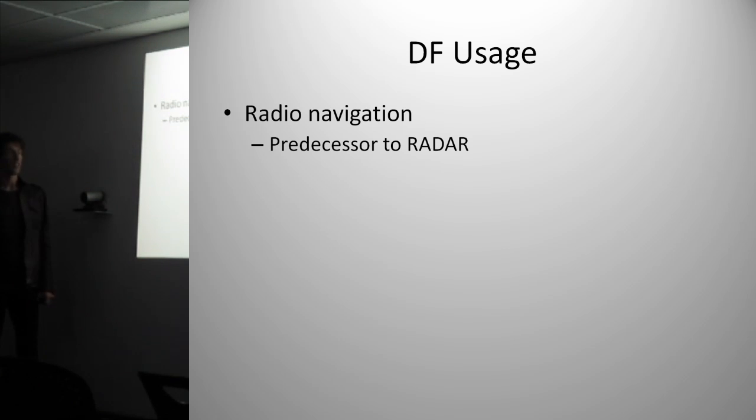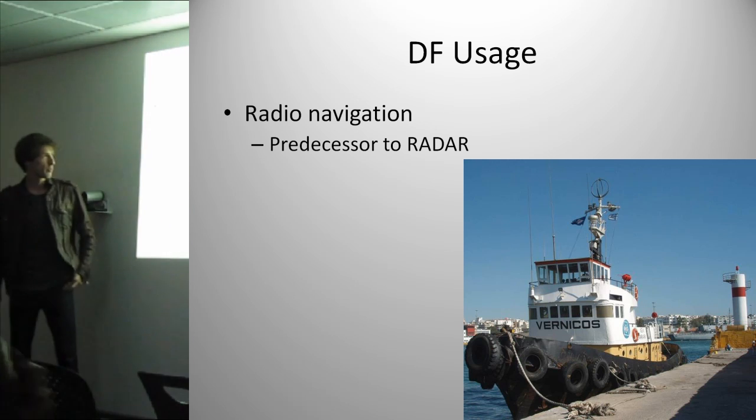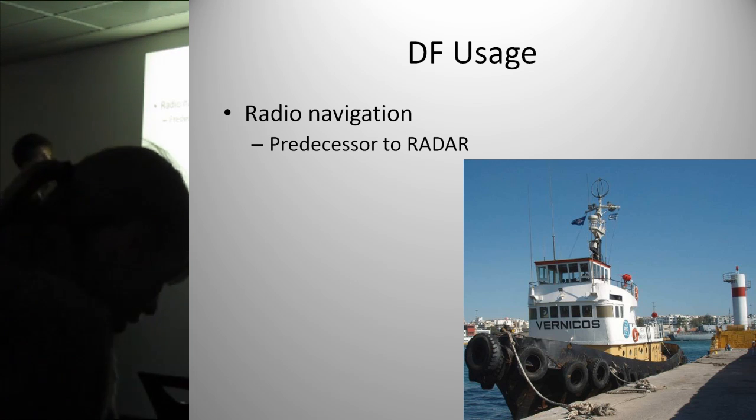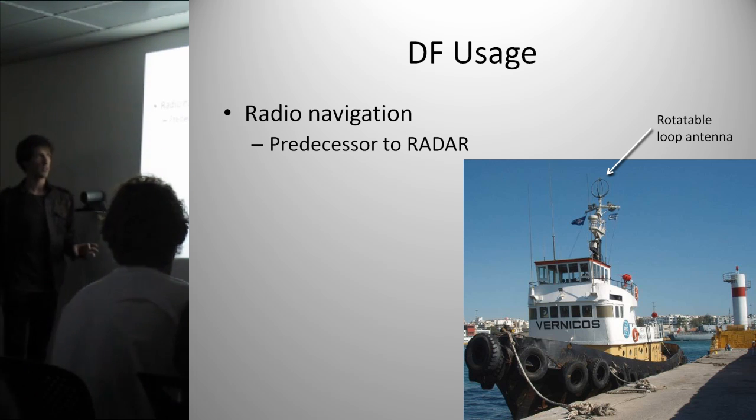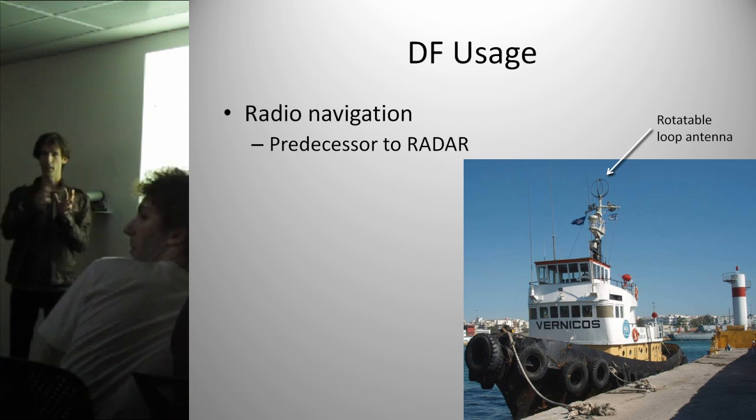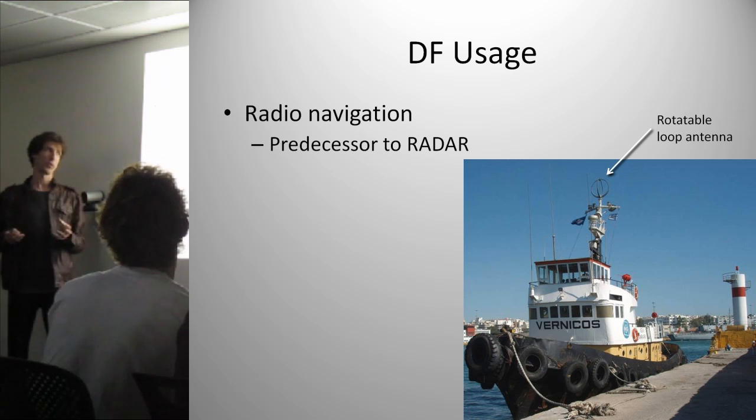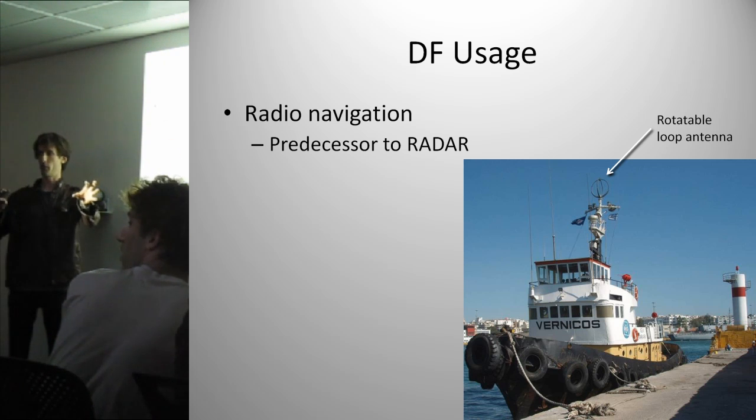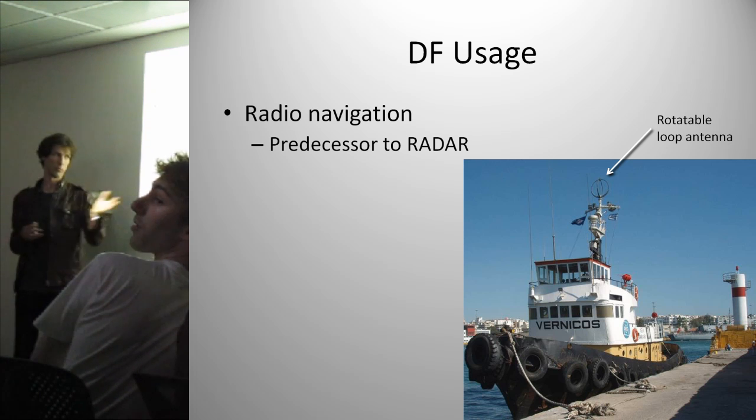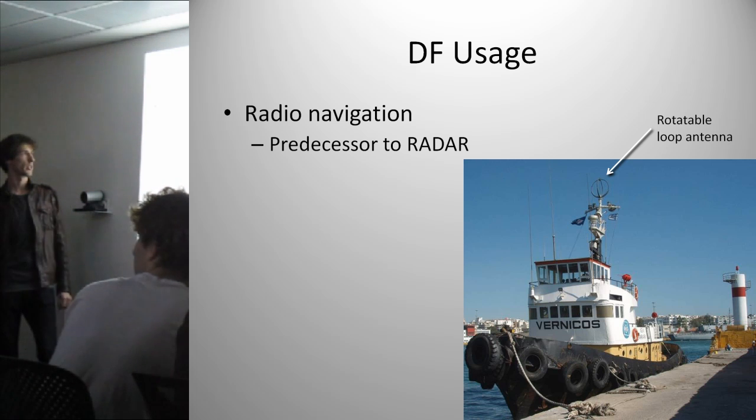Usage - it's used quite often. It used to be the pre-predecessor to radar. And here we have an example of a ship, a year old ship, and it's got a rotatable loop antenna on the top. You can turn that antenna around to try and figure out the direction that a radio transmission is coming from. For example, there used to be several radio nav systems where they would broadcast out at known positions, and if you wanted to figure out which way to take the vessel, you would rotate that thing, figure it out, and proceed in that direction.